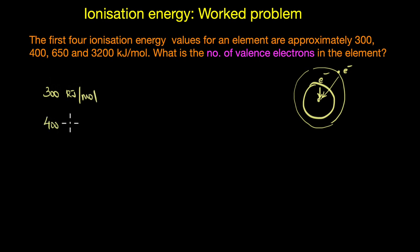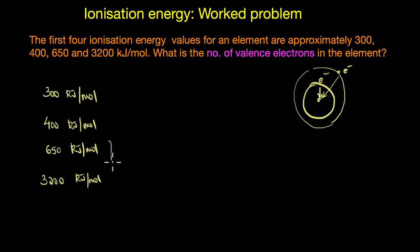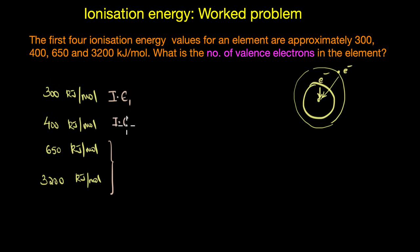Looking at the ionization values — 300, 400, 650, and 3200 kilojoules per mole — we can see there is a significant jump between the third and fourth ionization energy. This means we need to provide a substantially greater amount of energy to remove the fourth electron. IE1 refers to the energy required to remove the first electron, IE2 the second, IE3 the third, and IE4 the fourth.